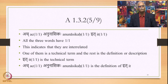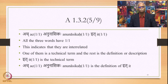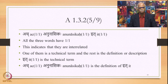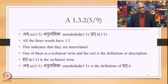Now let us come back to the other words and their meanings in the sutra: Ach, Anunasika, and It. Ach means a vowel. Anunasika is a nasal vowel or nasal. All three words have 1/1 as the case, indicating they are interrelated. This interrelation is 'Sanjnya-Sanjni-Bhava': one of them is a technical term and the rest is the definition or description of that technical term. It is the technical term, whereas Ach and Anunasika define it.